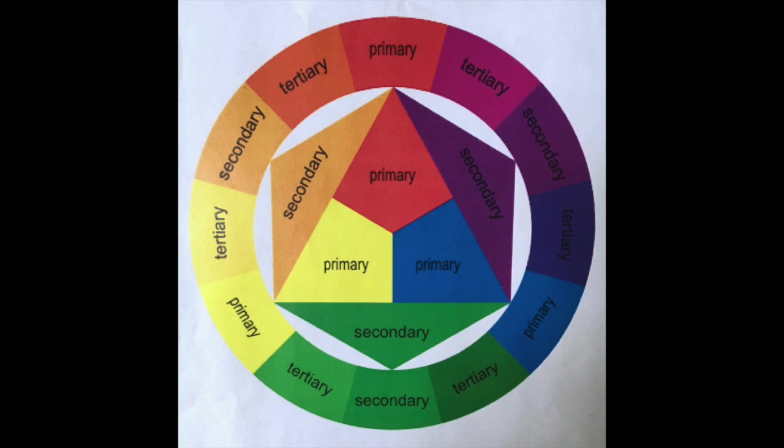The primary colors are red, yellow, and blue. They're called primaries because you have to begin with those colors. You can't use other colors to mix them. The secondary colors are made up by mixing two of the primaries, and the intermediate colors are made up by mixing a primary and a secondary.